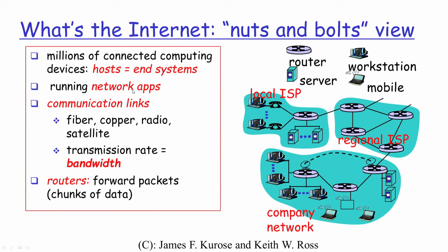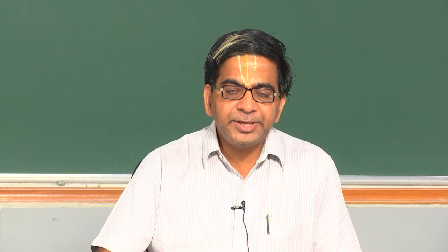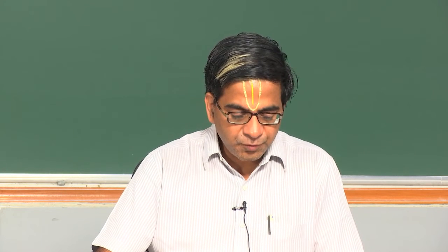Now how is this data going to be exchanged from one system to another? This is done over what is called a communication link. The communication link could be based on fiber, copper, satellite, or radio — there are many different types of physical transmission medium available.